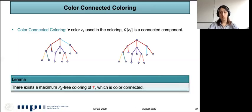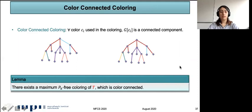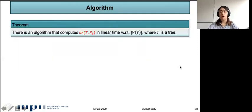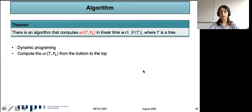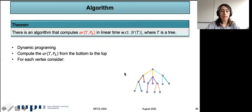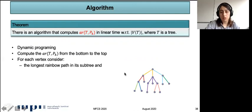We prove a lemma: for any maximum P_k-free coloring of T, we can find a color-connected coloring with exactly the same number of colors. This allows us to give our algorithm. We use dynamic programming and compute the anti-Ramsey number of T and P_k from bottom to top. For each vertex, we track the longest rainbow path in its subtree. In this graph, there are two options for this path; we choose one. We also track the second-longest rainbow path with a distinct color from the first.